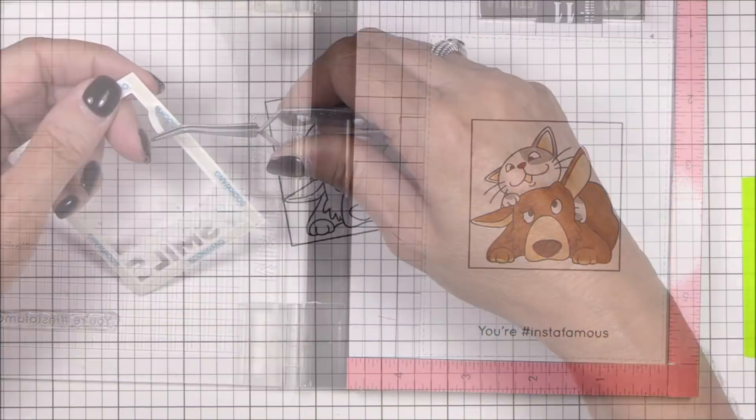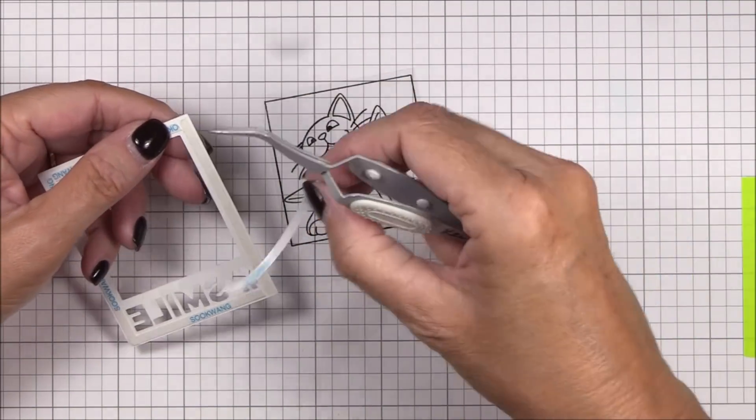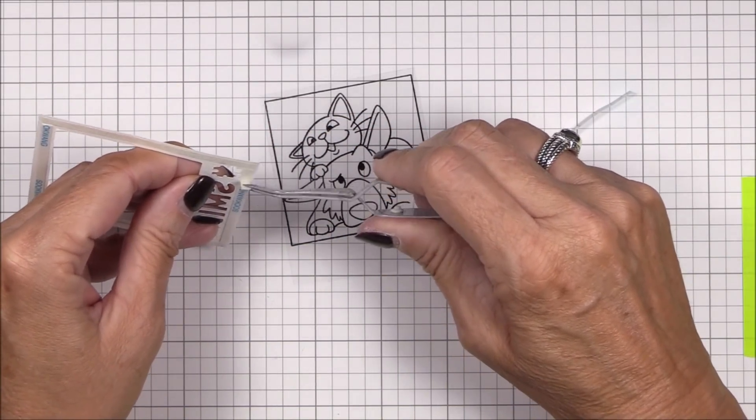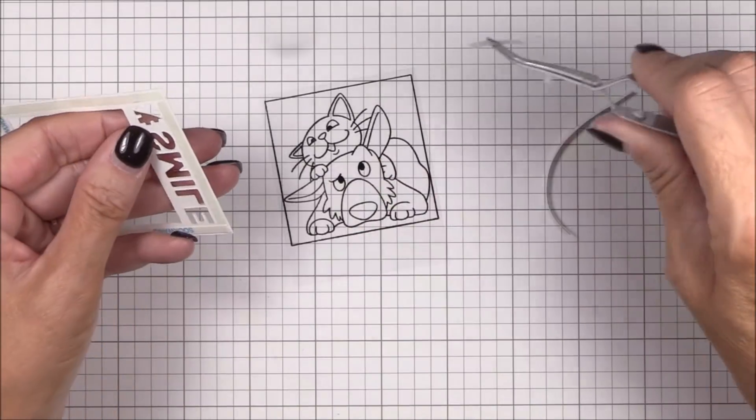I also die cut the outer edge of the image panel using the A2 stitched rectangle stack set 1 dynamics and I'm stamping one of the sentiments from the picture perfect stamp set using black licorice hybrid ink.